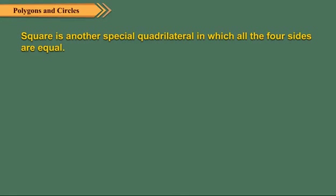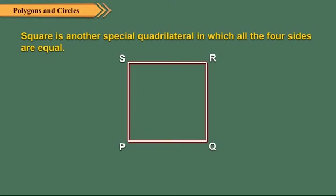Square is another special quadrilateral in which all the 4 sides are equal. In the figure, PQRS is a square. So PQ is equal to QR is equal to RS is equal to SP.